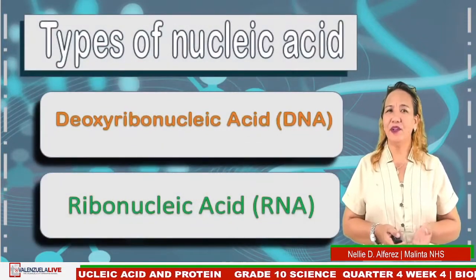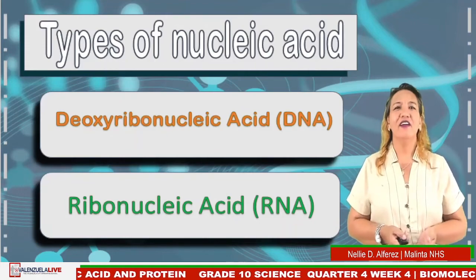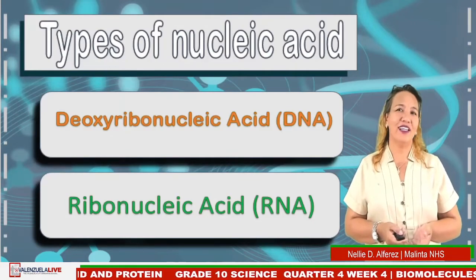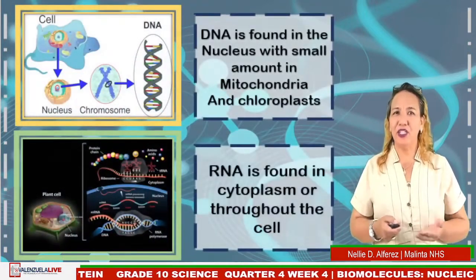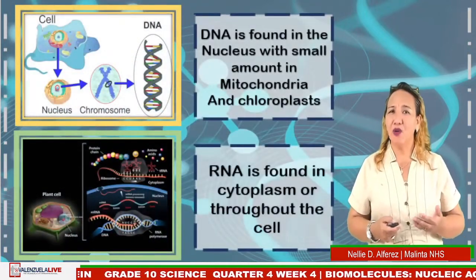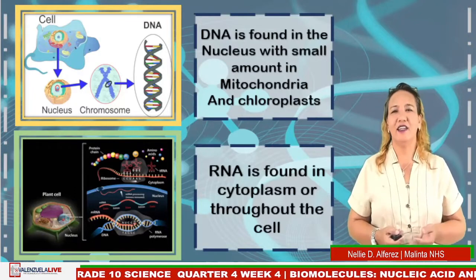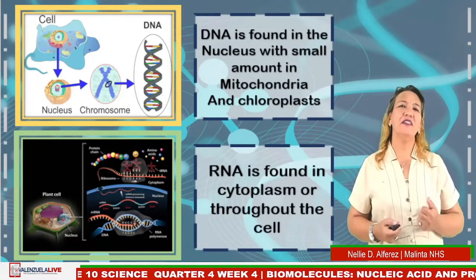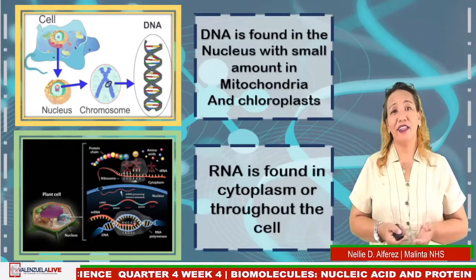There are two types of nucleic acid: deoxyribonucleic acid, also known as DNA, and ribonucleic acid, also known as RNA. DNA is found in the nucleus, with small amounts in mitochondria and chloroplasts, while RNA is found in the cytoplasm or throughout the cell.